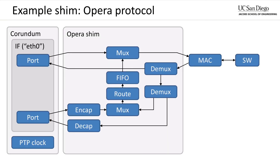This is a block diagram of the Opera shim. Similar to the circuit emulator shim, the Opera shim sits between the NIC data path and the Ethernet MACs. From this position, it can inject low latency Opera packets into the outgoing bulk traffic, as well as separate out incoming encapsulated Opera traffic. Incoming Opera traffic destined for the localhost is peeled off, decapsulated, and handed off to the NIC data path for receive. New low latency traffic is encapsulated, merged with incoming traffic, and routed to one of the uplinks based on PTP time. For running Opera over an emulated circuit switch, the circuit emulator shim can be inserted between the Opera shim and the Ethernet MACs.